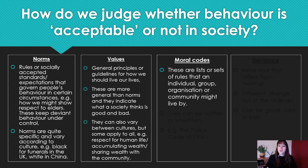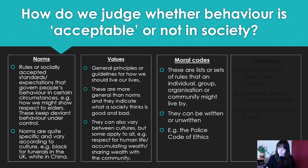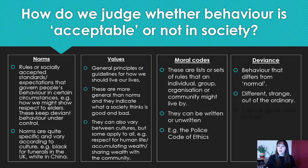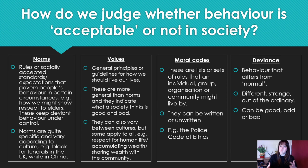For example, the police have codes of ethics. We have codes at college — things that you should and should not do. These are moral codes that you follow. Finally, deviance: behaviour that differs from the norm — different, strange, out of the ordinary. It can be good, odd, or bad. There's quite a lot of information on that slide, so please do pause it, fill out your notes, get it all down. You might want to highlight the bits that make them different because they are quite similar. But you do need to learn them and know what the difference is.